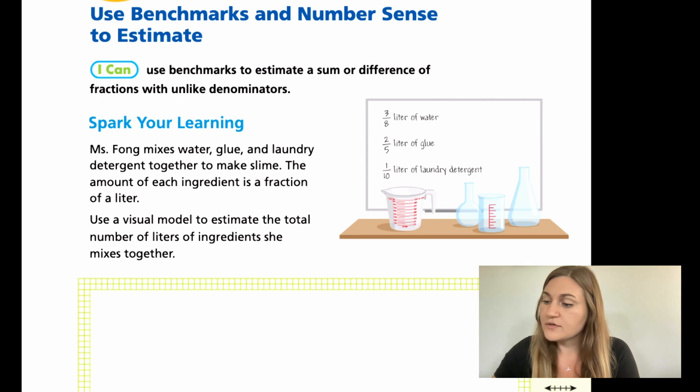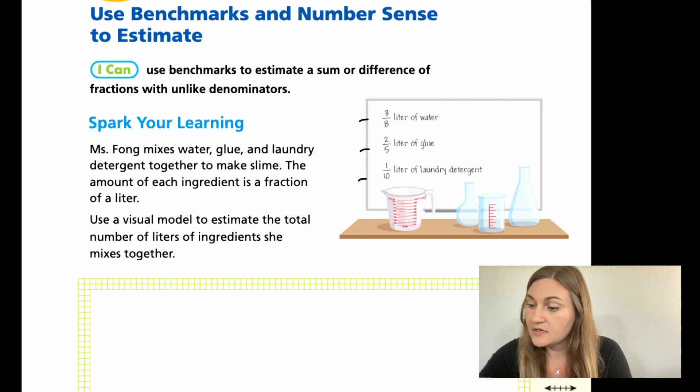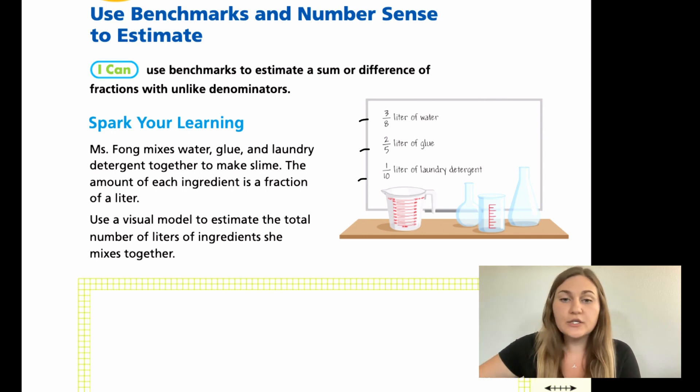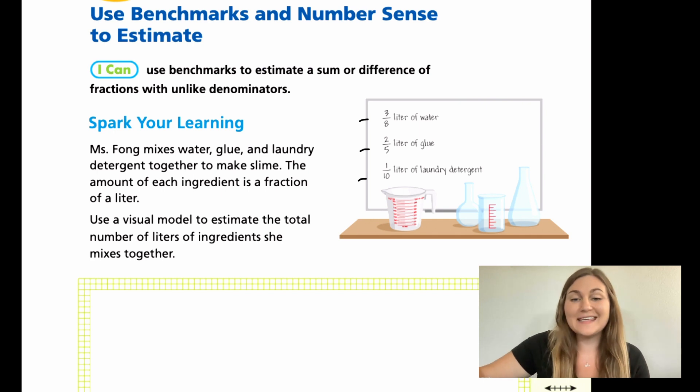Over to the side here, we have our three different amounts that she gives us on the picture. So 3/8 a liter of water, 2/5 of a liter of glue, and 1/10 of a liter of laundry detergent. We want to use a visual model to guess or estimate how many liters that'll be if we add them all together.